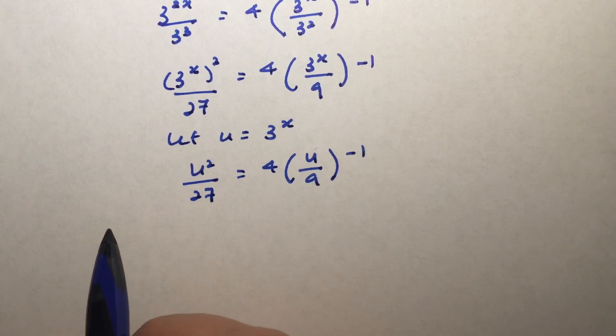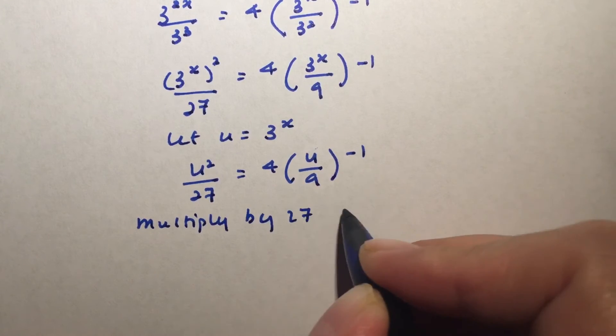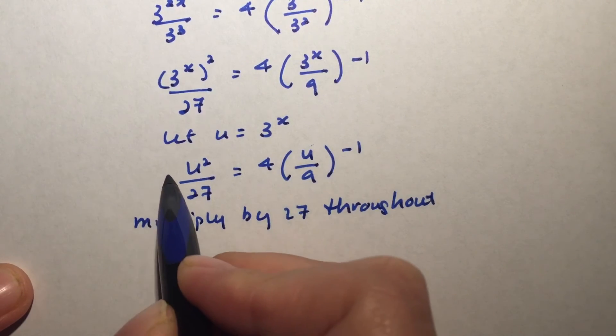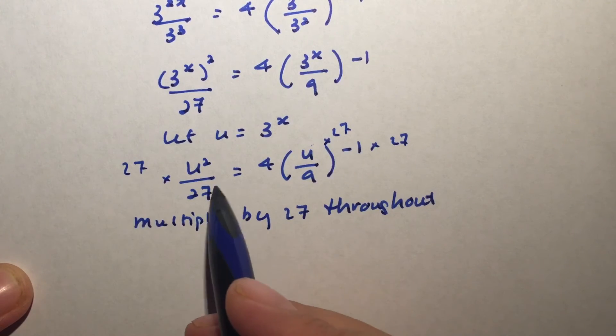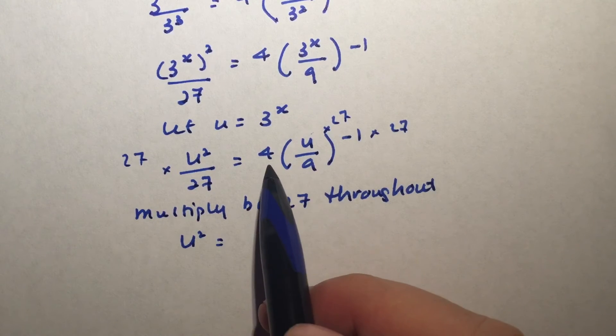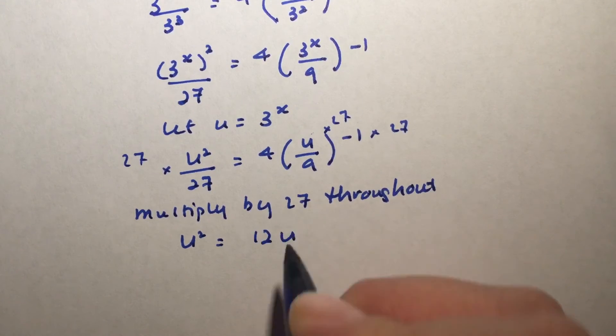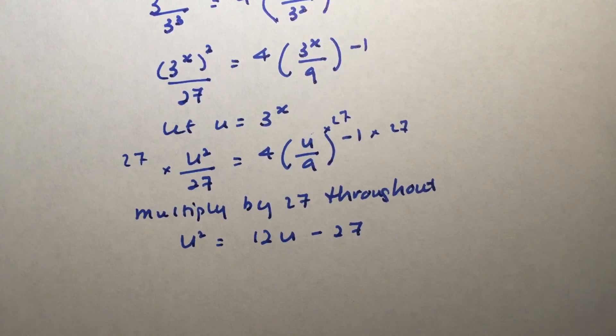Let's, why not we just multiply by 27 throughout? So I multiply by 27, multiply by 27, multiply by 27. So 27 divides out, so I only have u squared left. And for this one here, I have 9 and 27, which is 3. So 4 times 3 will give me 12, and negative 1 times 27 is negative 27. So bringing all the terms to the left-hand side, this is what we have.